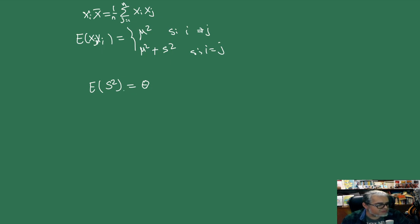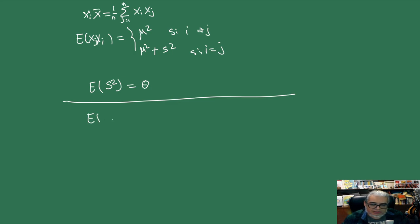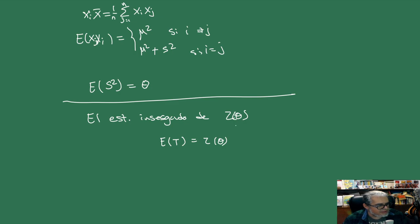Lo mismo que habíamos visto la vez pasada: si tenemos una función parametral, entonces el estimador insesgado de una transformada de parámetros es insesgado si la esperanza es la tau.